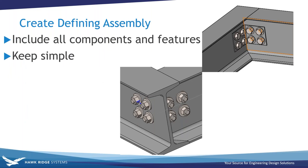In this example, I've chosen to make this joist bracket a smart component, which will automatically add the hardware and holes for the hardware. What you see now is my defining assembly. I like to keep these assemblies as simple as possible so they're easy to open for editing and not used elsewhere to avoid accidental edits. I use the Hole Series tool and Smart Fasteners to add the hardware and holes — these features are available in SOLIDWORKS Professional and above, but they're not necessary for creating smart components.